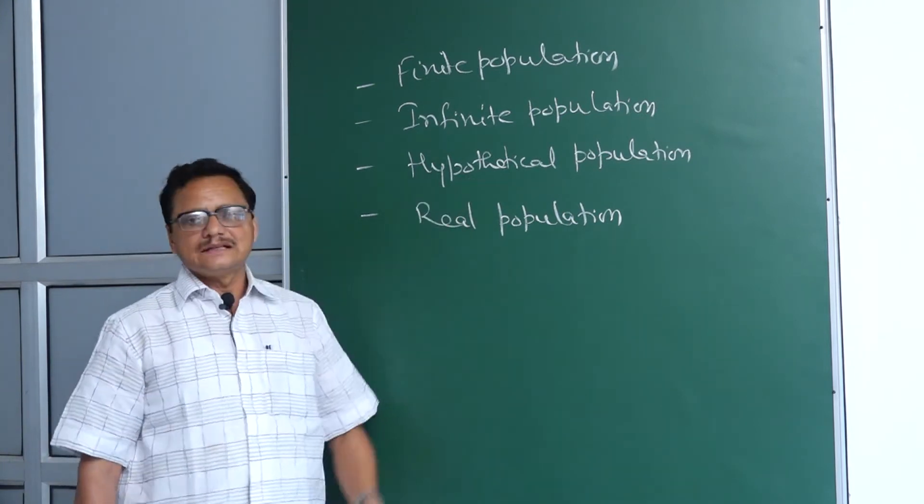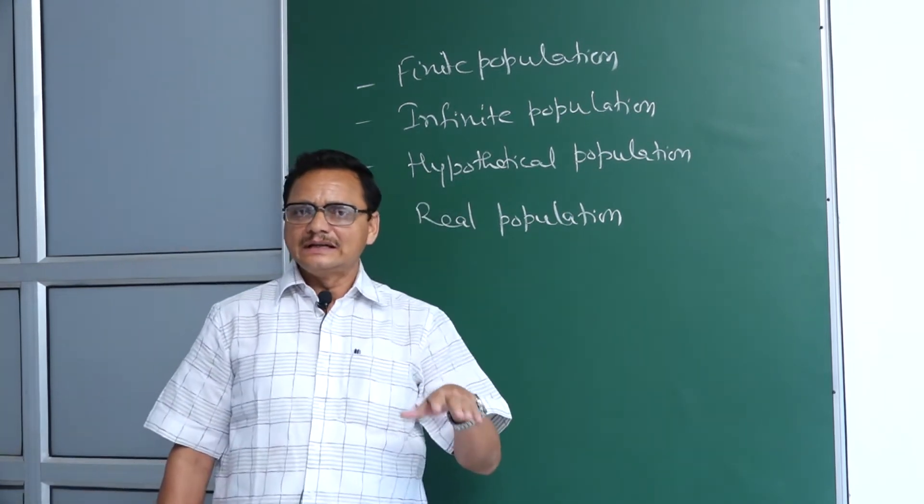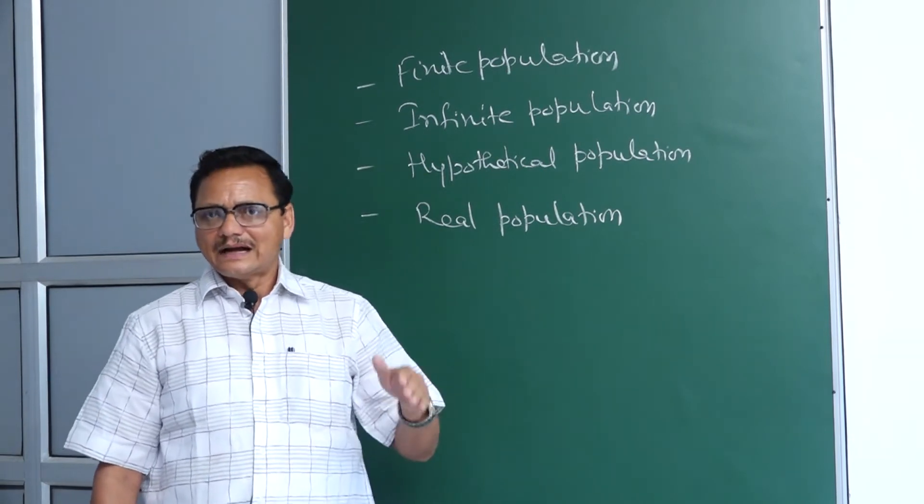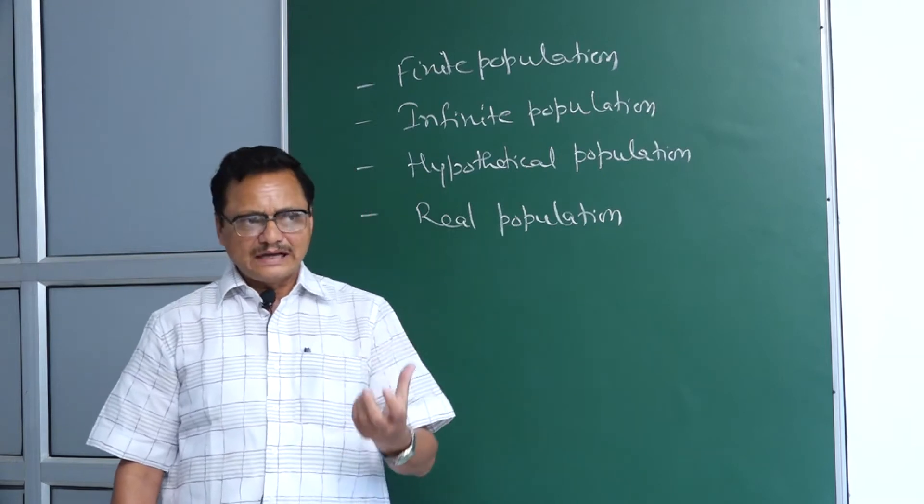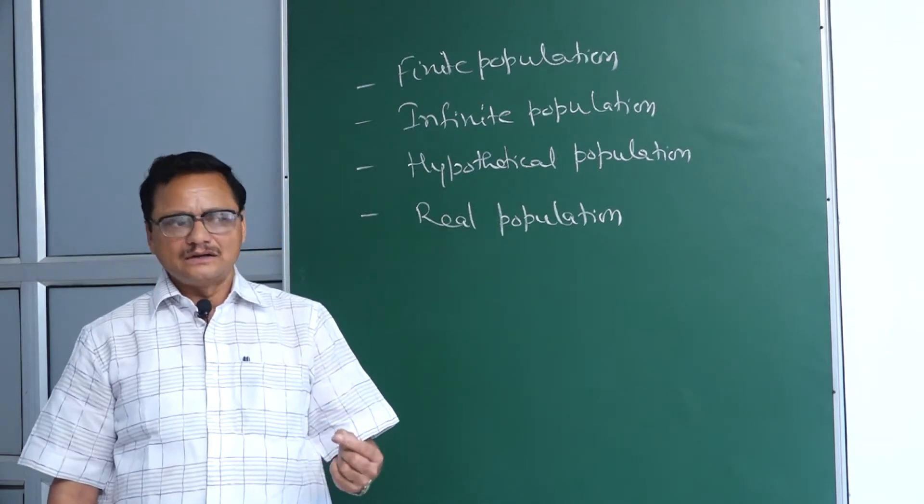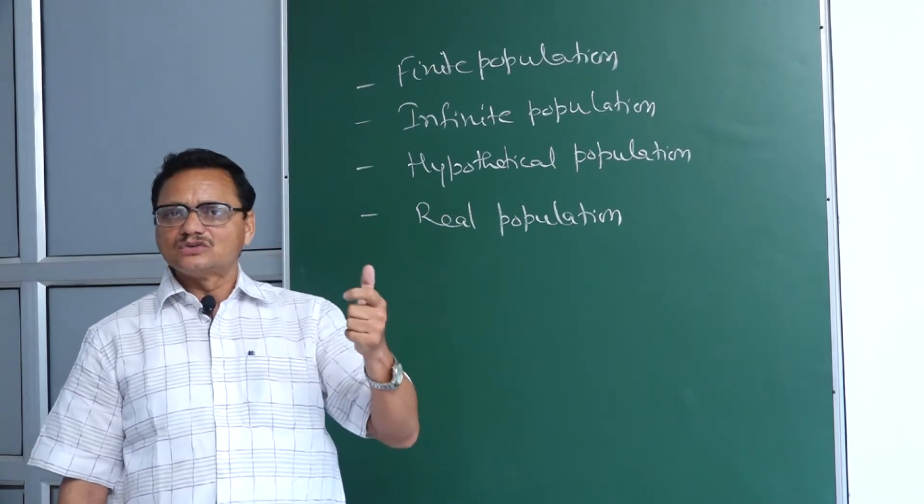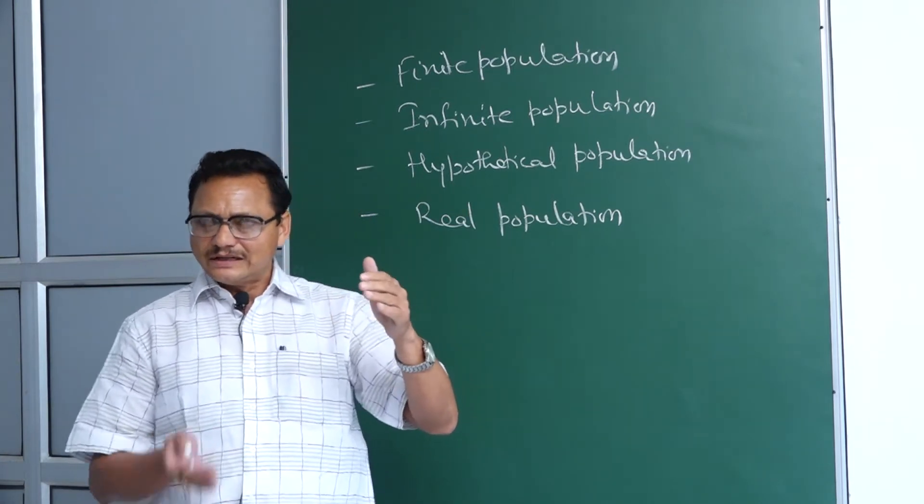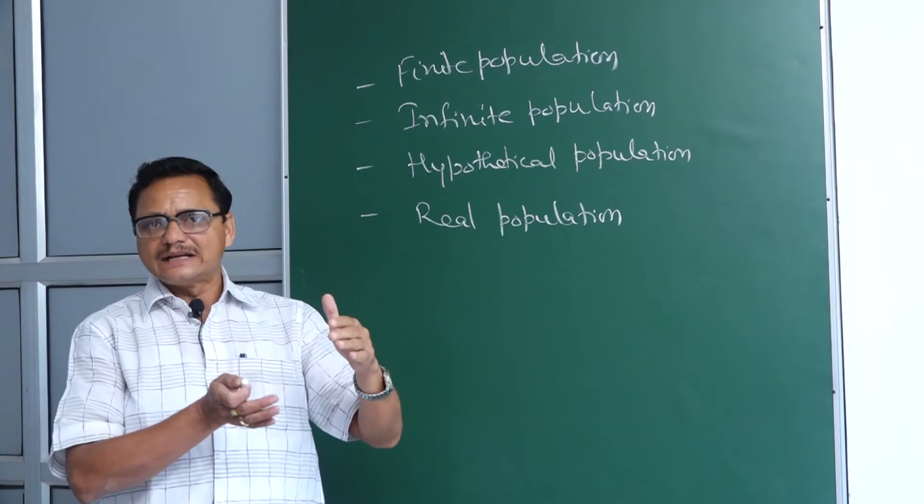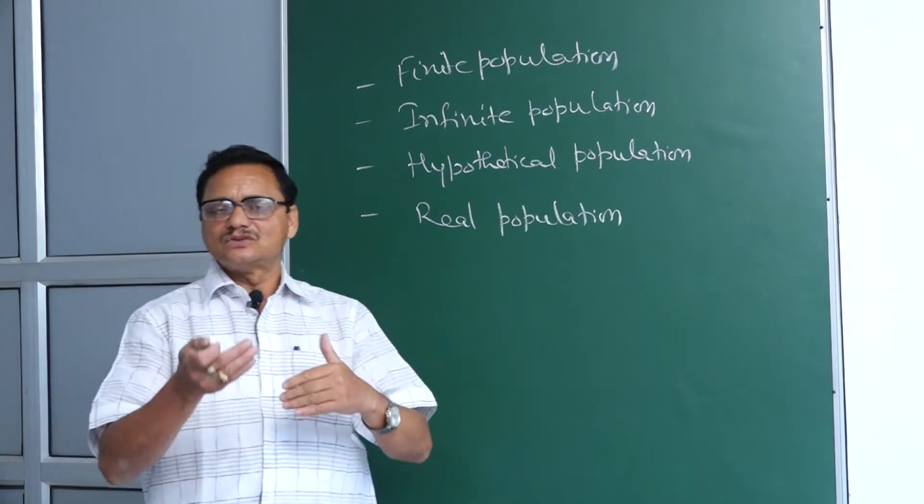Hypothetical population is probabilistic. We can assume we are going to toss a coin 10,000 times. Probability is half, so it means 5,000 times head and 5,000 times tail.